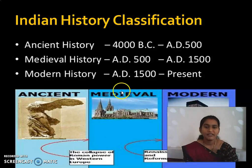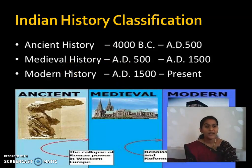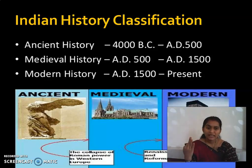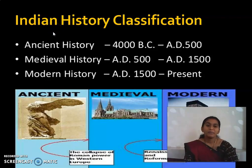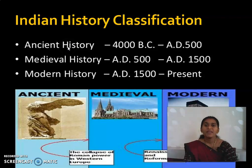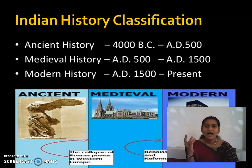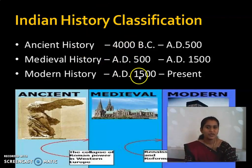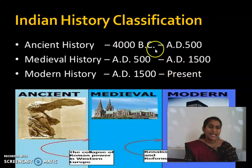According to James Mill, we have divided Indian history into three periods, and according to the British people, we have also divided Indian history into three periods — that is ancient, medieval, and modern history. Make note of this timeline as well.